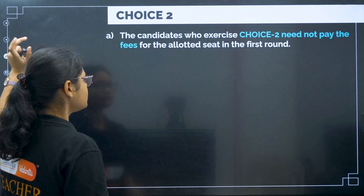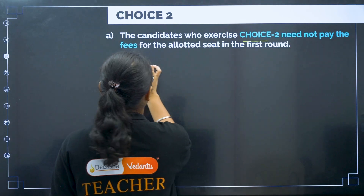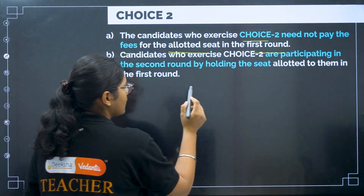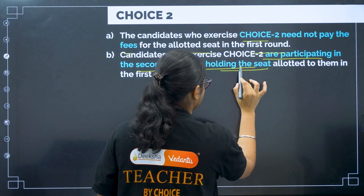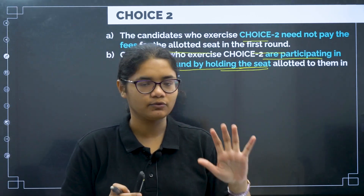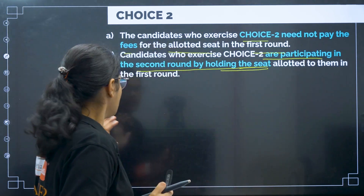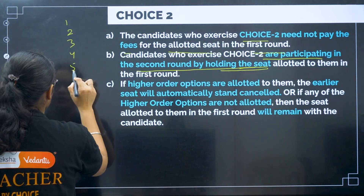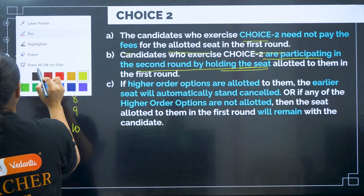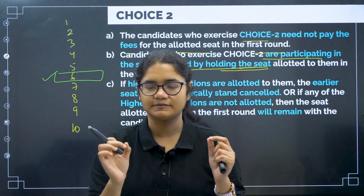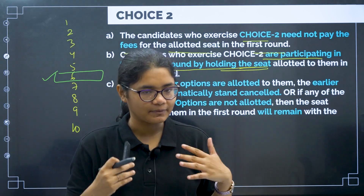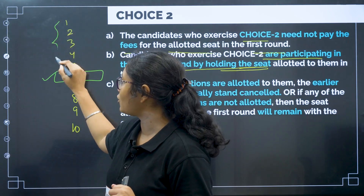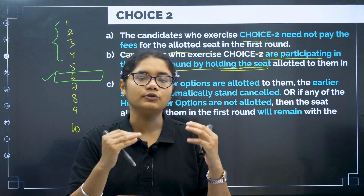For Choice 2, candidates need not pay any fees for the allotted seat in the first round. They can participate in the second round of counselling while holding their current seat. For example, suppose you gave 10 options in your choice entry and were allotted the sixth option. You are happy with it, but you hope you can still get one of the better options — options one through five. In that case, you should go for Choice 2.